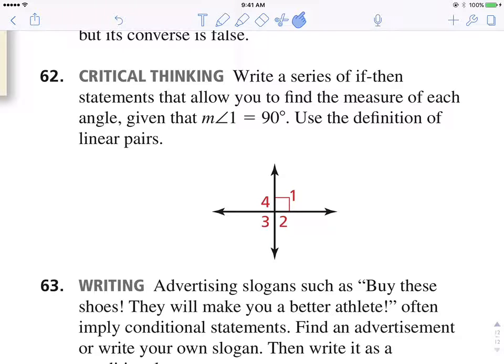I'm going to talk about one more question. Question 62, critical thinking. Write a series of if-then statements that allow you to find the measure of each angle, given that the measure of angle one is 90 degrees. Use the definition of linear pairs.